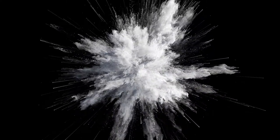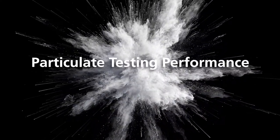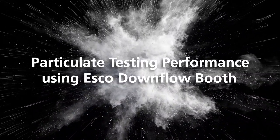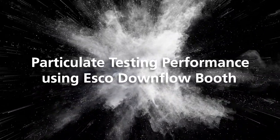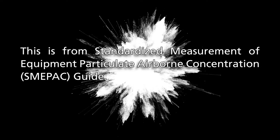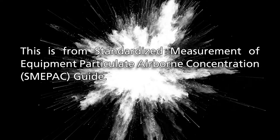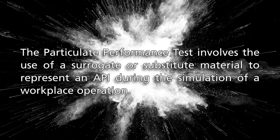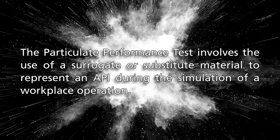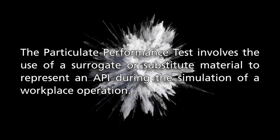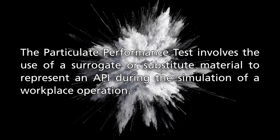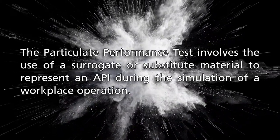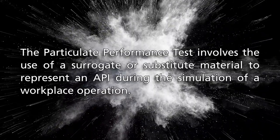Instructional Documentary for the Particulate Testing Performance of a Downflow Booth. This is from the Standardized Measurement of Equipment Particulate Airborne Concentration Guide. The particulate performance test involves the use of a surrogate or substitute material to represent an API during the simulation of a workplace operation.